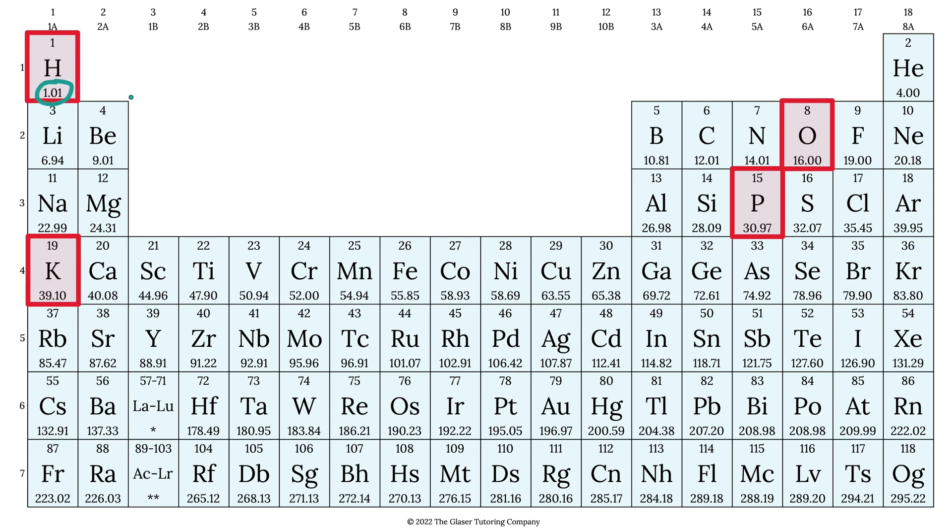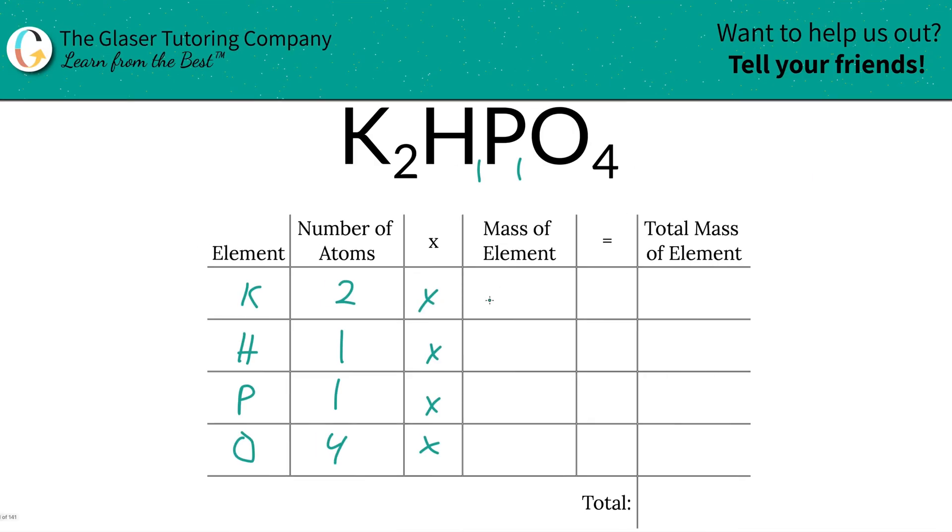Potassium is 39.10, hydrogen is 1.01, phosphorus is 30.97, and oxygen is 16. So we're going to write those values into the table.